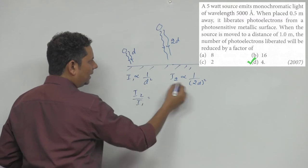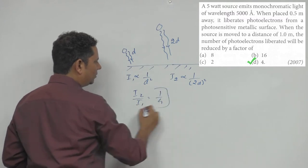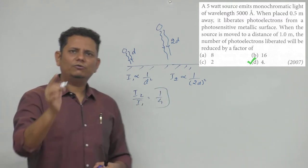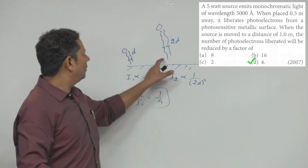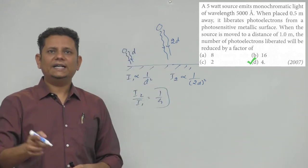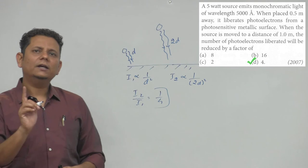I₂ divided by I₁, if you calculate, will be 1/4. That means your intensity becomes one-fourth. Because your source reached double distance, intensity became one-fourth, so the number of